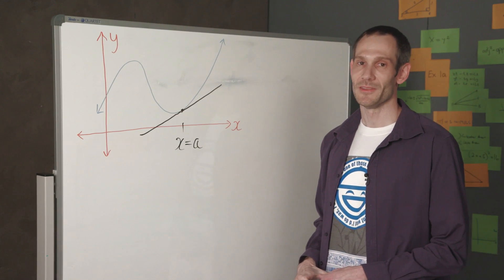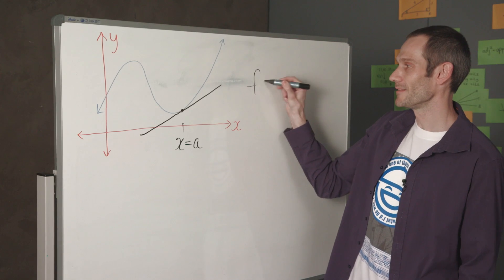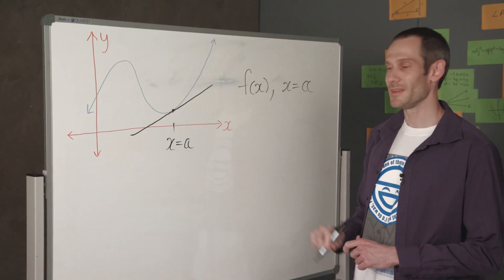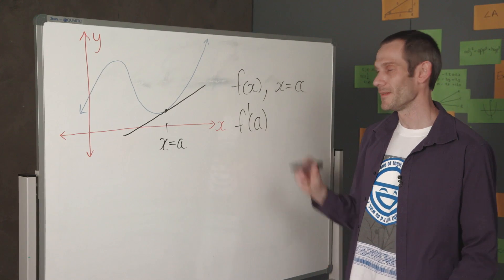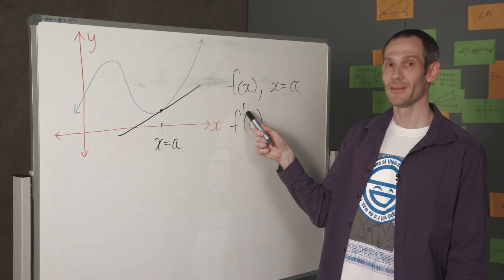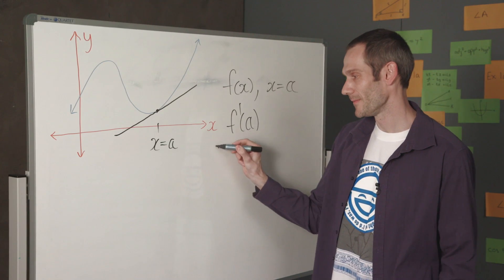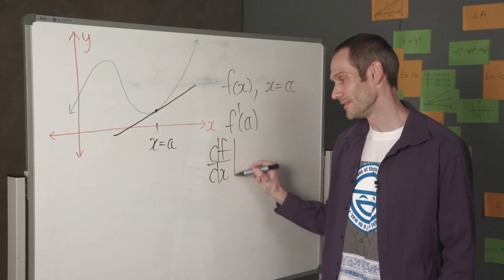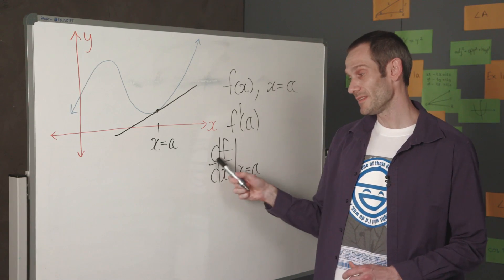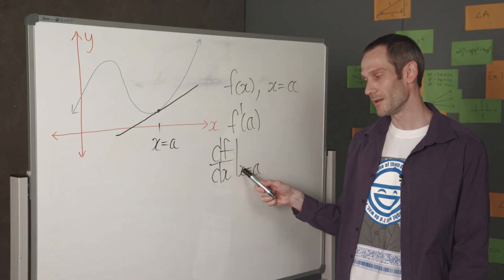There are a number of ways that we can denote the derivative of a function. The two most common ways are, given a function f of x at the point x equals a: one way we can denote the derivative is f prime at a, which means the derivative of the function evaluated at that point x equals a. The other way we can denote the derivative is as d/dx of f of x evaluated at x equals a. The d/dx here is our differential operator — it is saying the derivative of the function f with respect to its variable x, evaluated at the point x equals a.